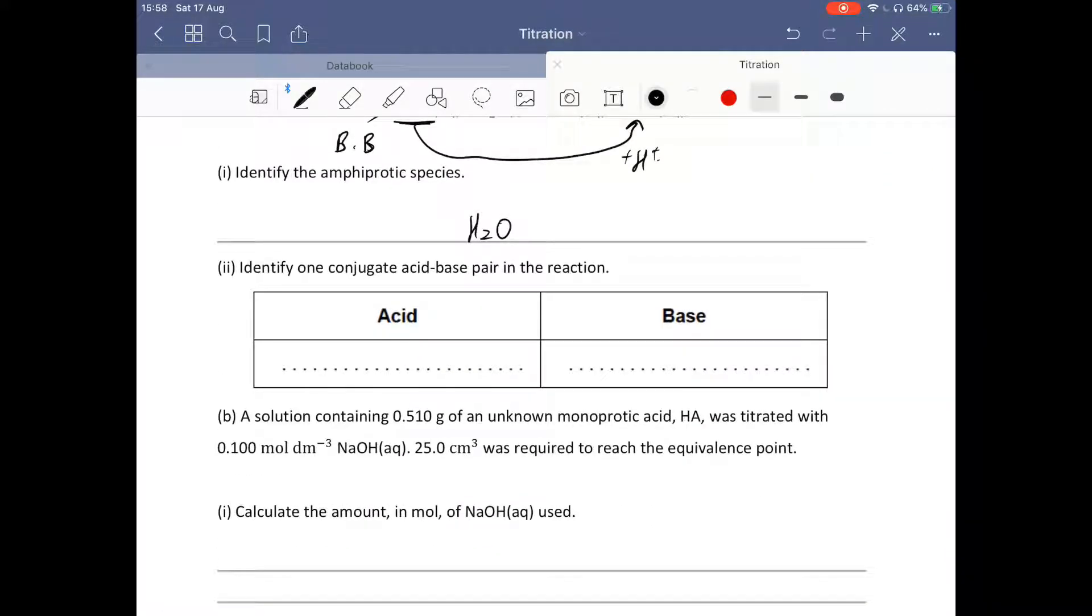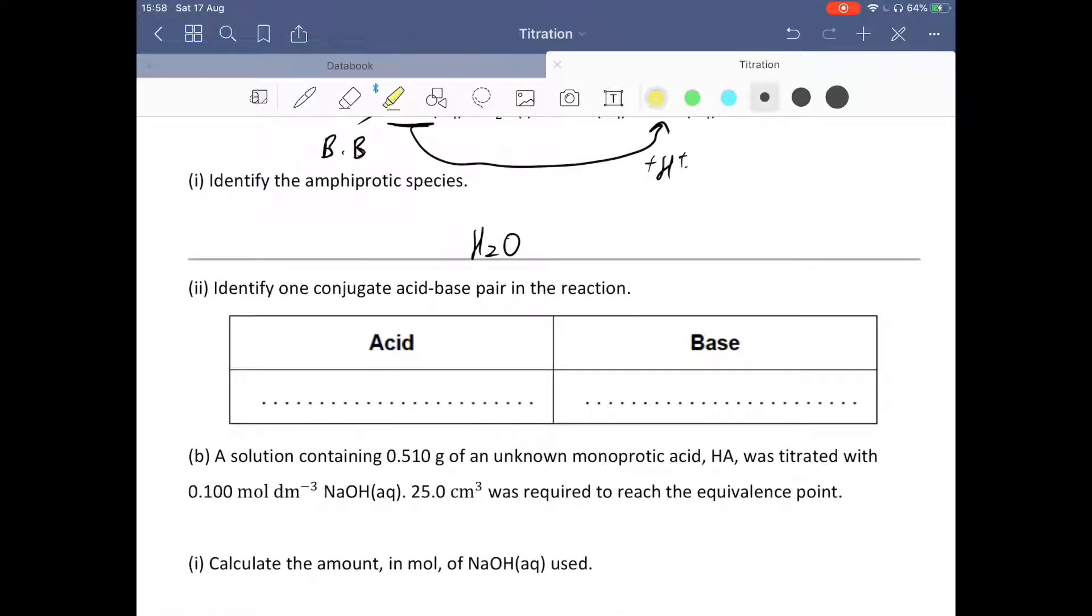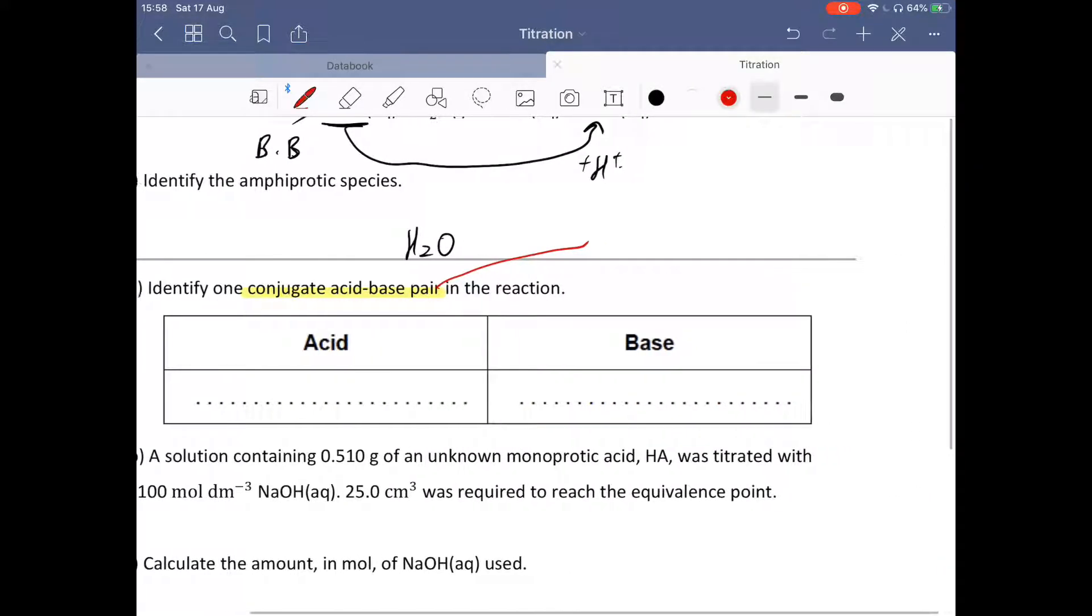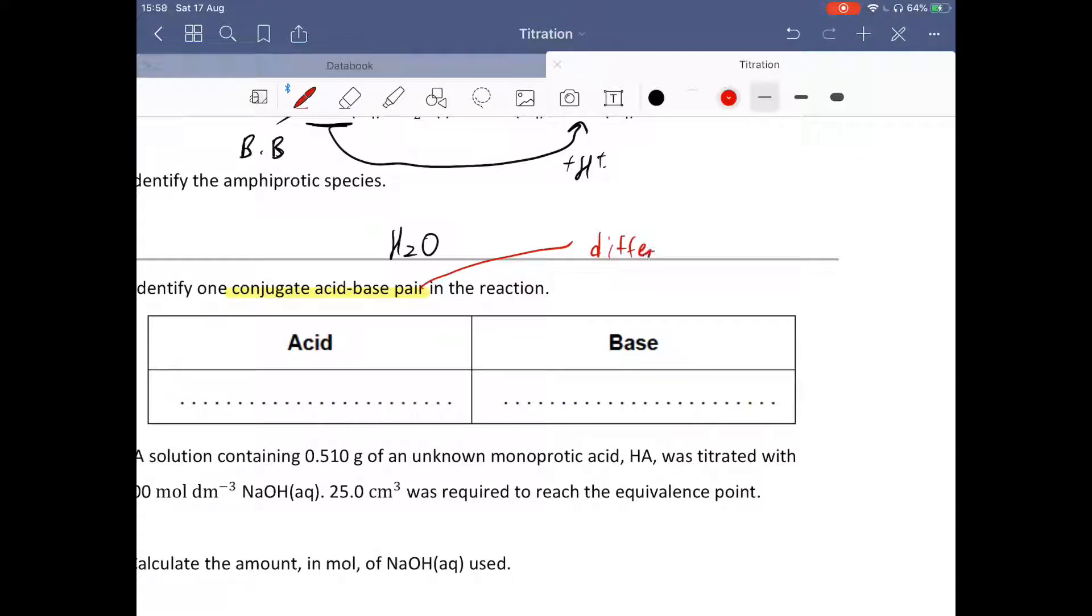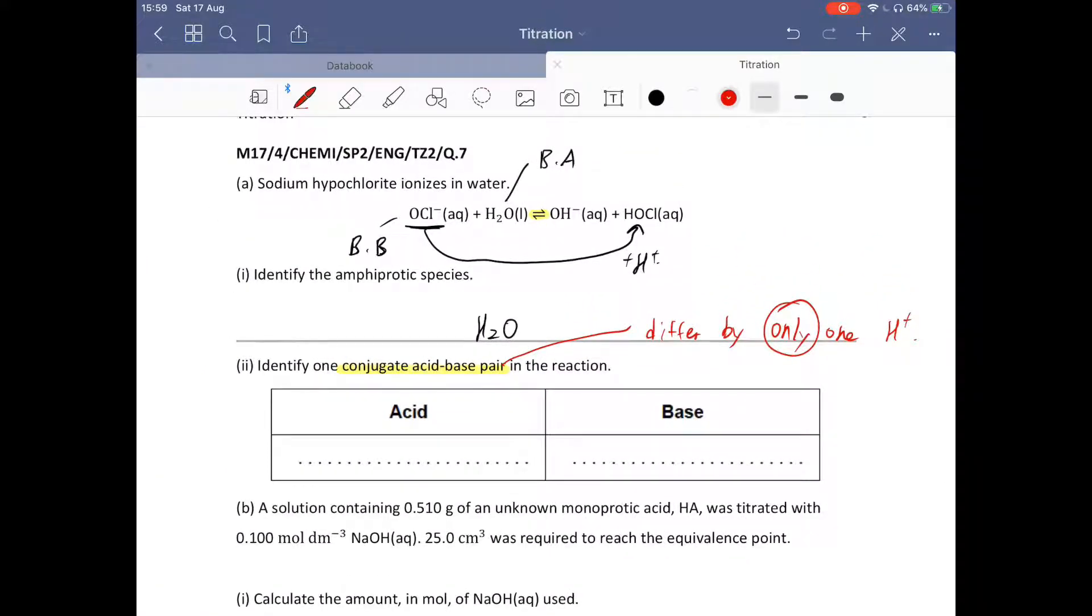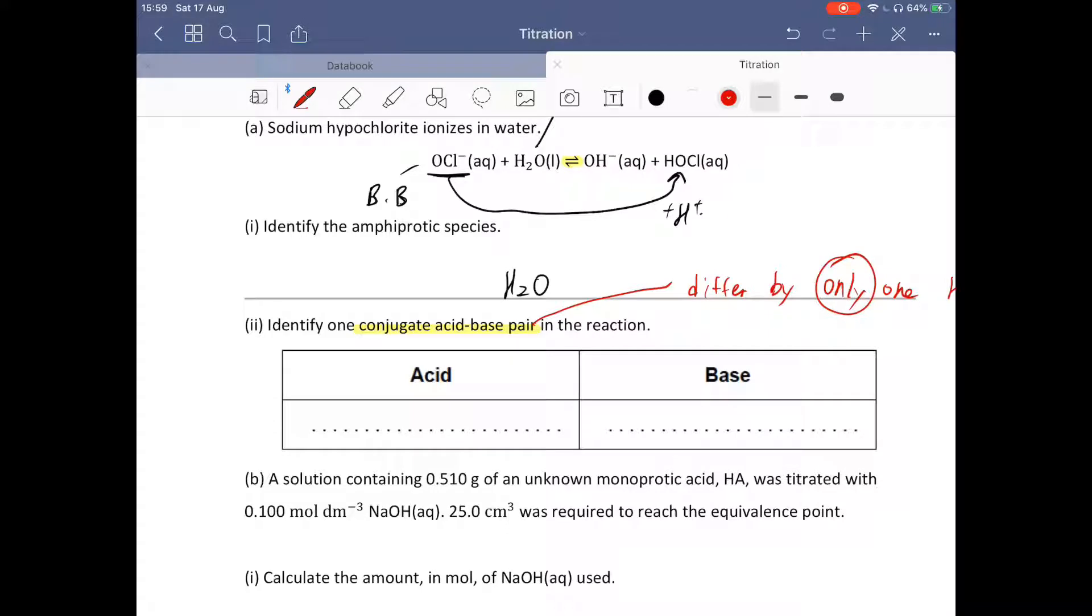Part 2. Identify one conjugate acid-base pair in this reaction. What is the definition of conjugate acid-base pair? They only differ by one hydrogen ion, not two, not three. In this question, there are two conjugate acid-base pairs. The first one is water and hydroxide ion. The second one is hypochlorite ion and HOCl. You can write either one of these two conjugate acid-base pairs.